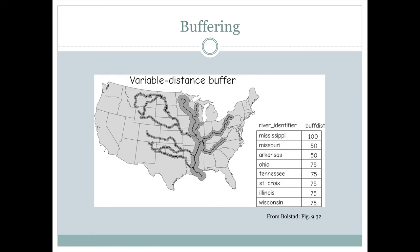Here's an example of a variable width buffer and we can see the place it is getting the variable width from is some column in the attribute table. In this case, the attribute is called buff distance. And we can see that that varies from 100 for the Mississippi to 75 for some of these other rivers and then down to 50 for the Arkansas and Missouri River. And then we can clearly see on the map there's three different buffer distances.